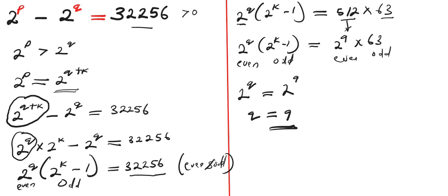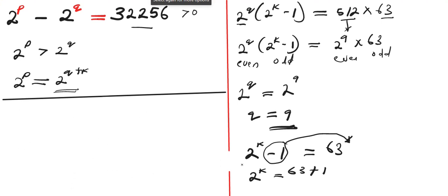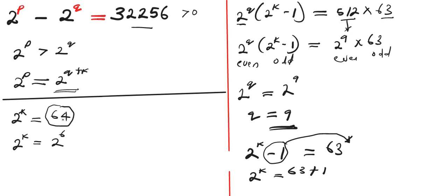Now let's consider the odd part. We have 2 to the power of k minus 1 equals 63. To solve this, we bring the negative 1 to the other side: 2 to the power of k equals 63 plus 1, which is 64. If we change 64 to its exponential form with base 2, we have 2 to the power of k equals 2 to the power of 6, because 2 to the power of 6 equals 64. So equating the exponents, k equals 6.